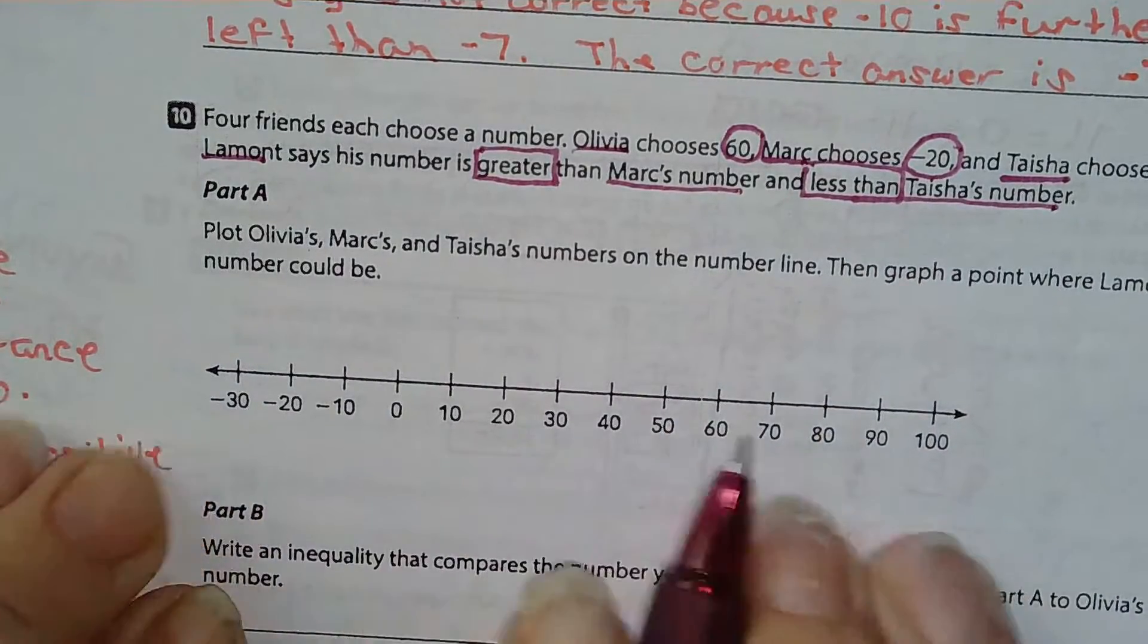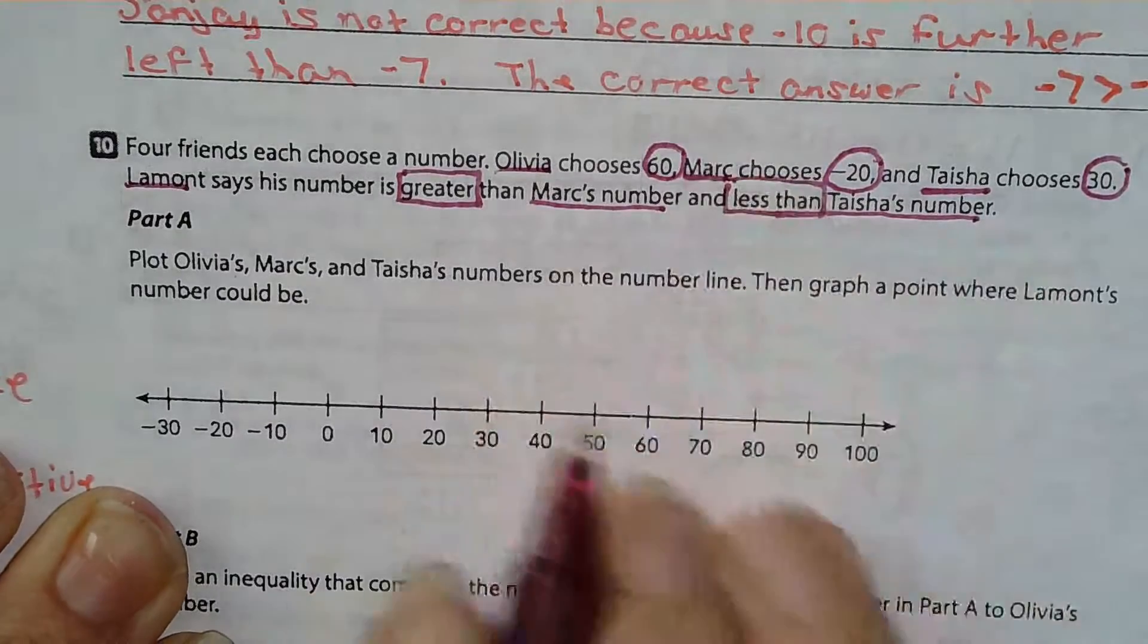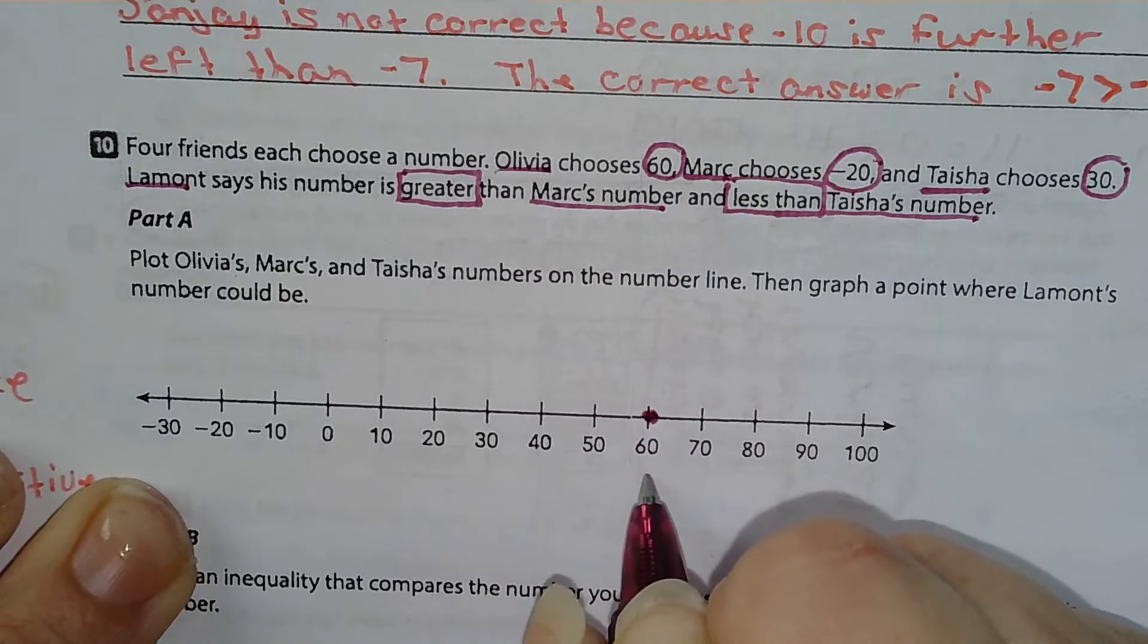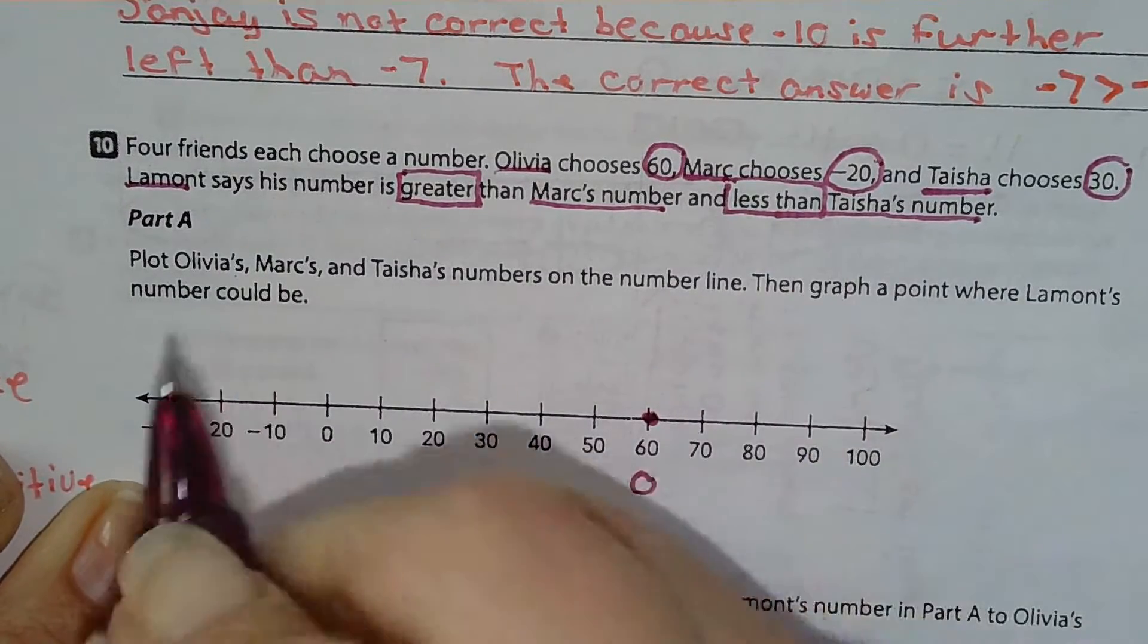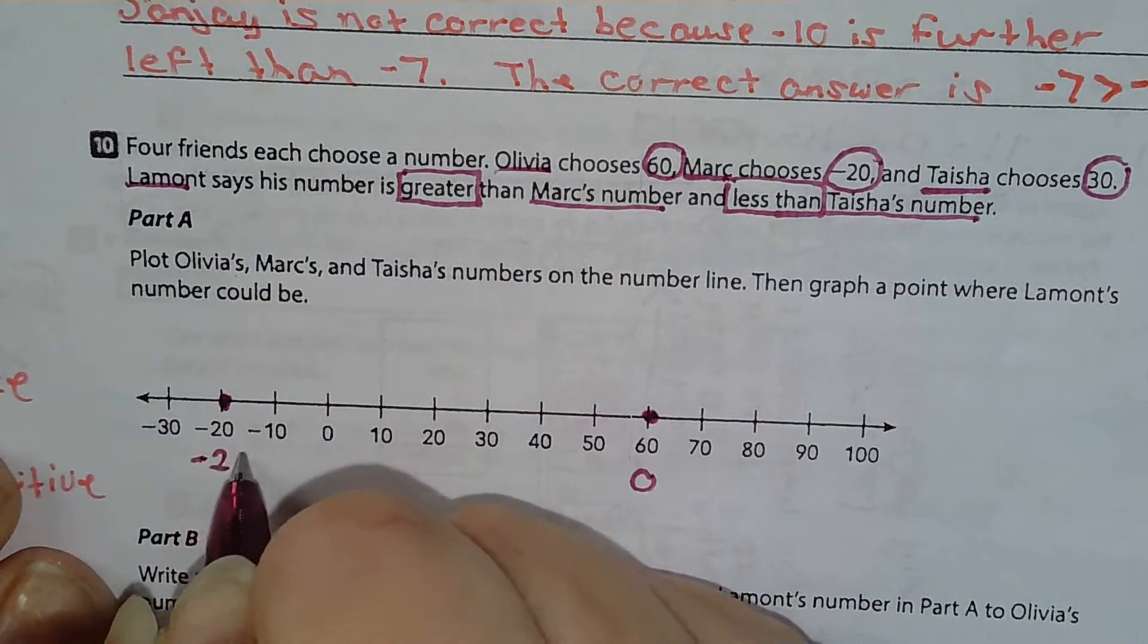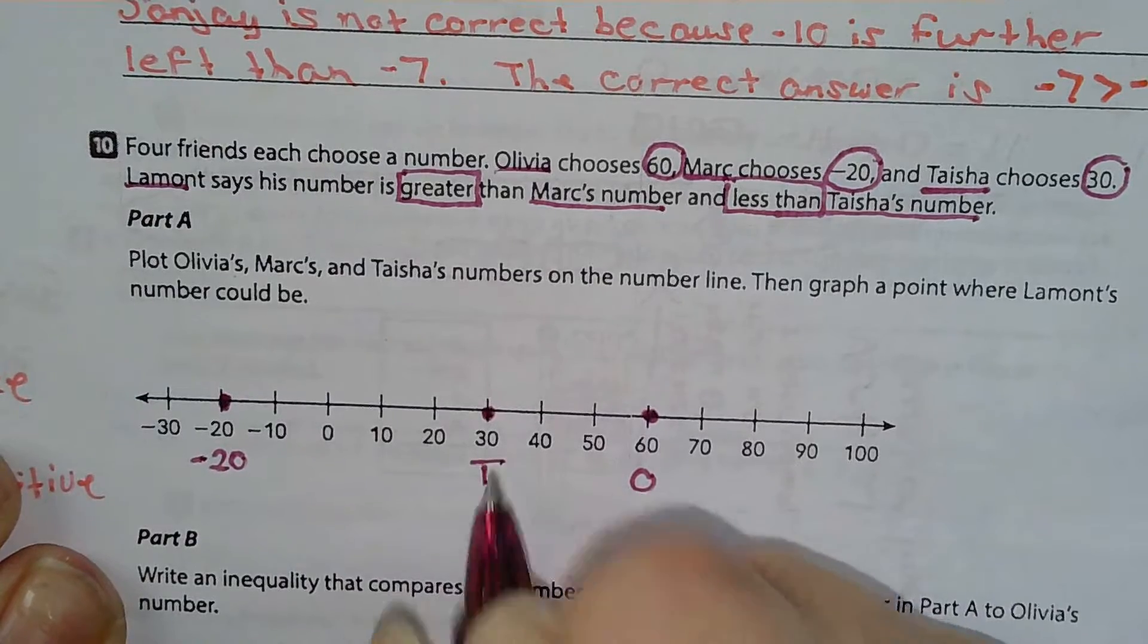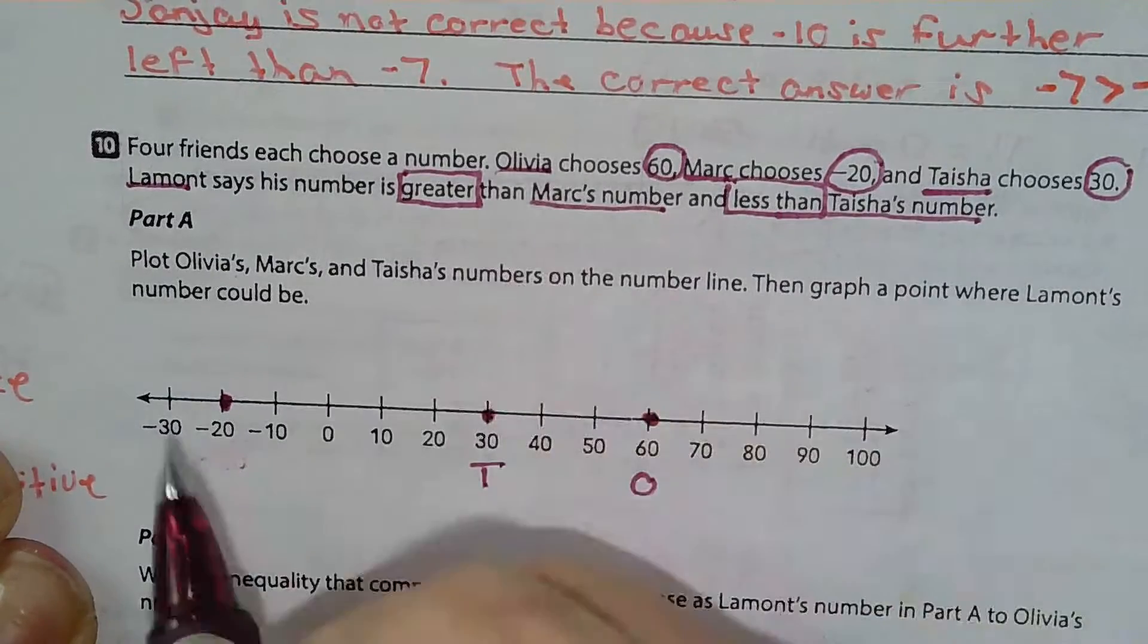Oh, my plan. Well, it's giving me a number line, right? So my plan is I'm just going to plug this in. I've got Olivia chooses 60, Mark chooses negative 20, Tasha chooses 30. The numbers are already there for me. That's Mark.